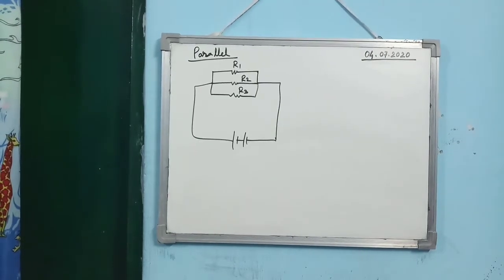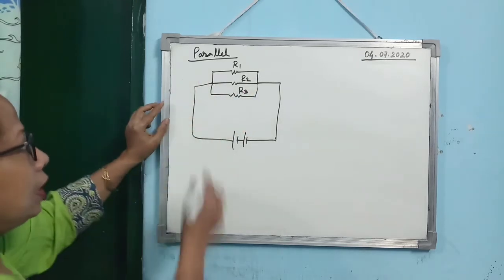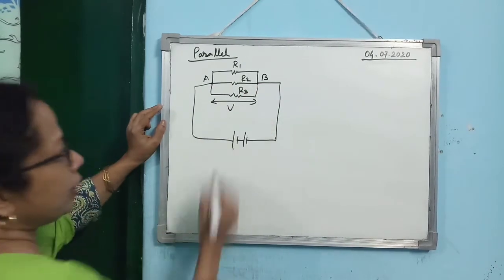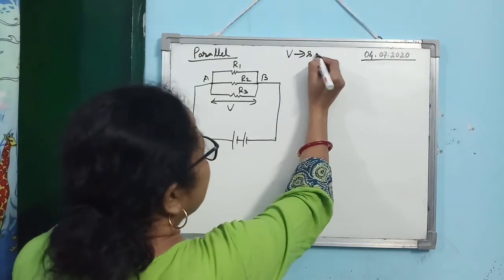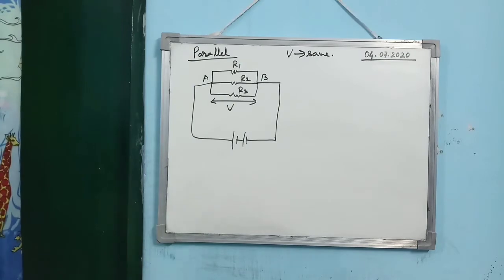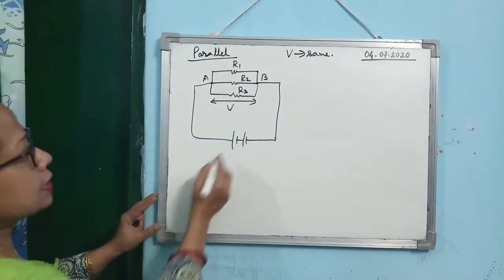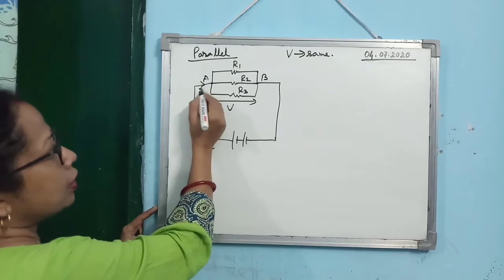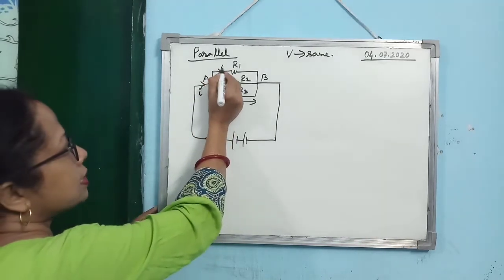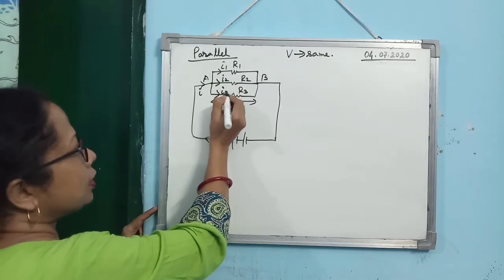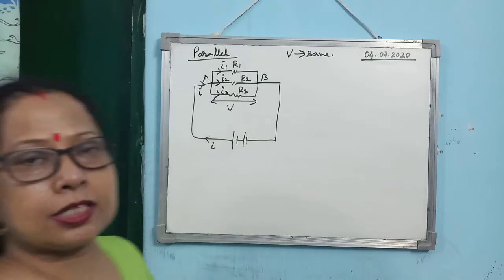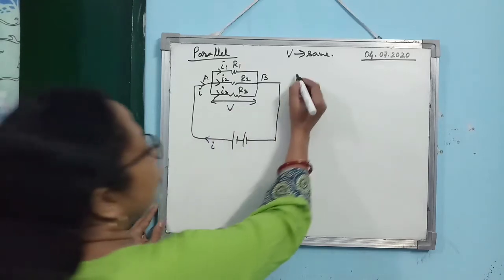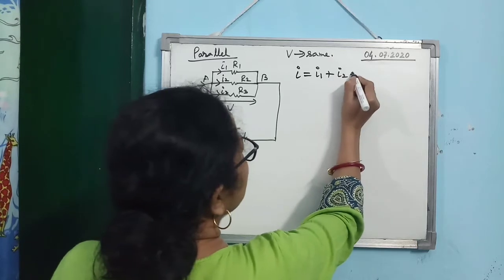For resistances connected in parallel, all resistances are connected between the same two points, so V is the same for all. For series connection, current was the same for all; for parallel, PD is the same. The total current I from the battery divides into three parts I₁, I₂, I₃ through R₁, R₂, R₃ respectively. So I = I₁ + I₂ + I₃.